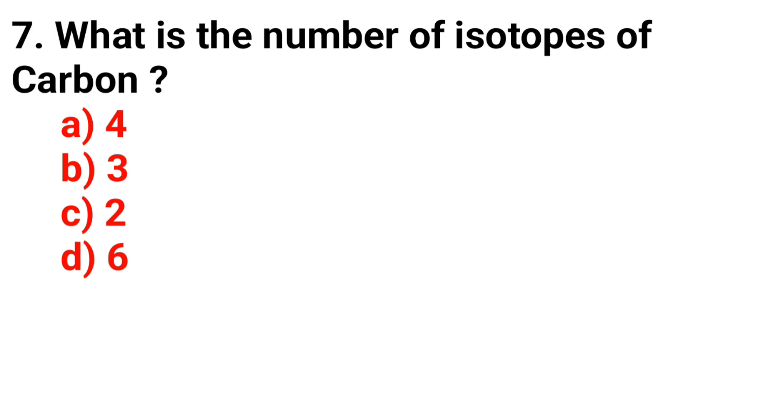Question 7. What is the number of isotopes of carbon? The correct answer is Option D, Six.